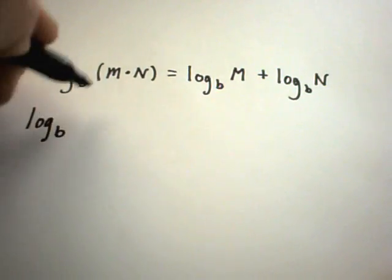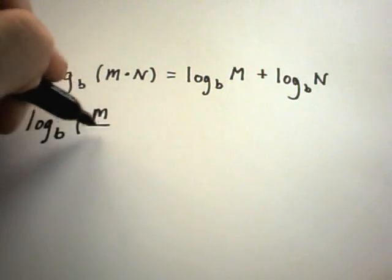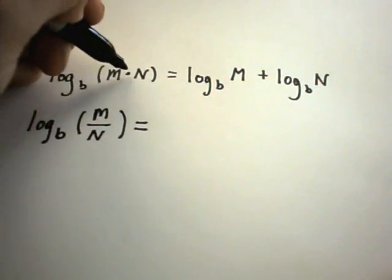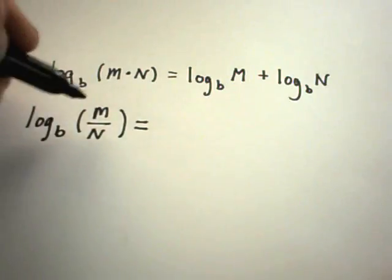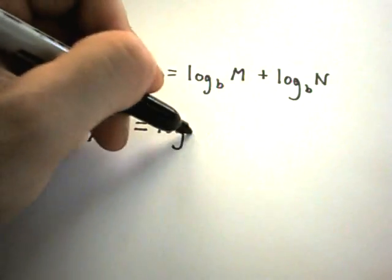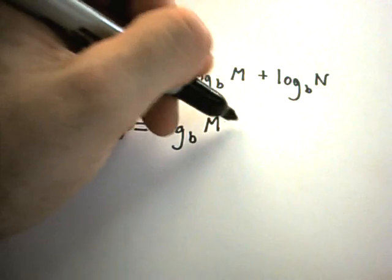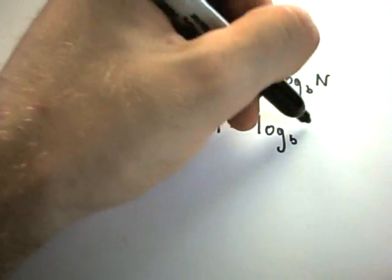The next one says, if you have log base b of m divided by n, well, if multiplication becomes addition, maybe a good guess would be that division turns into subtraction. And, that is, in fact, what happens.